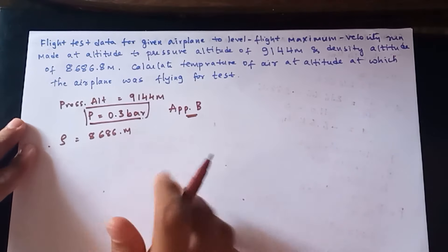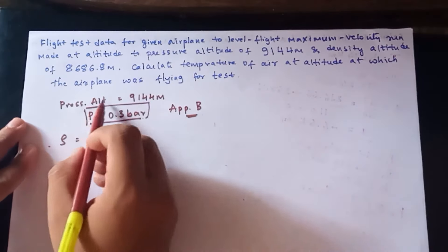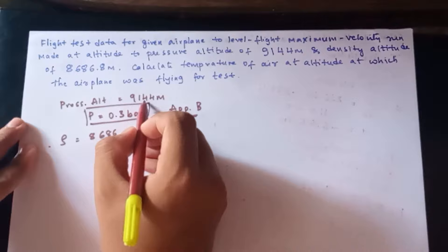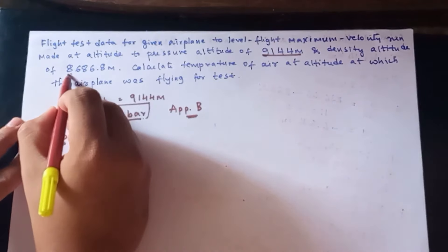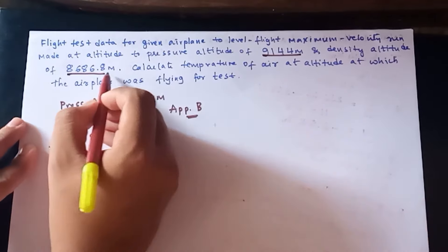To solve this problem, this is a very simple problem. The pressure altitude is given as 9144 meters and density altitude is given as 8686.8 meters.